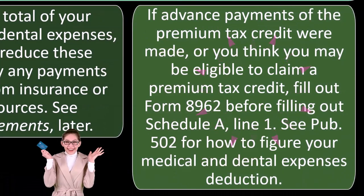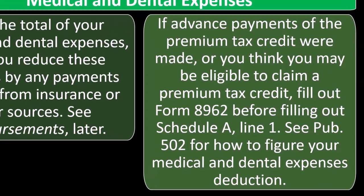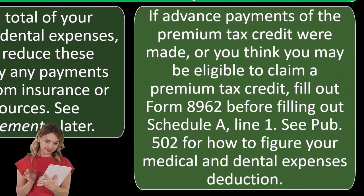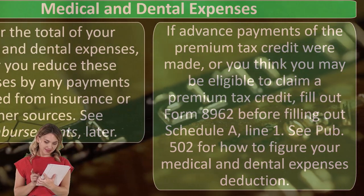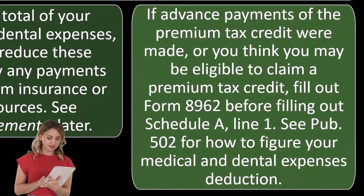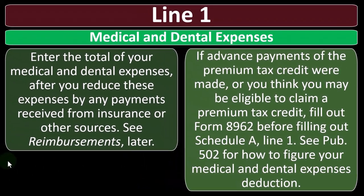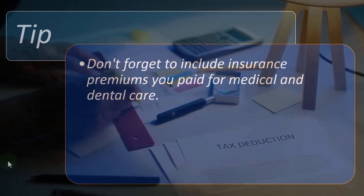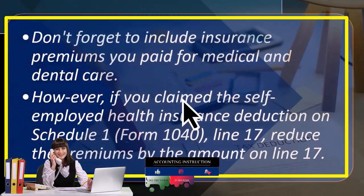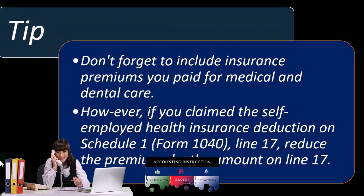The premium tax credit is usually aimed at low to moderate income individuals, meaning their premiums were lowered in anticipation of the credit. You have to figure out how much your actual payments were after the credit. This often doesn't create a conflict on Schedule A because low to moderate income people typically take the standard deduction rather than itemizing. Also, don't forget to include insurance premiums you pay for medical and dental care — however, if you included the self-employed health insurance deduction on Schedule 1 Form 1040 Line 17, reduce the premiums by that amount to avoid double dipping.